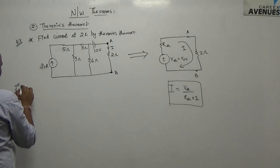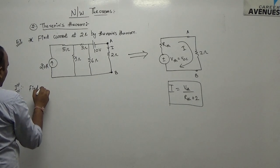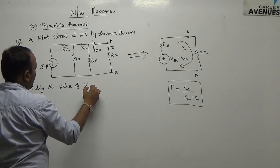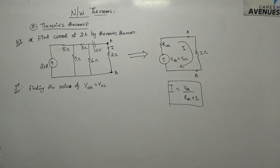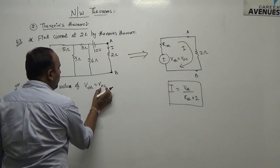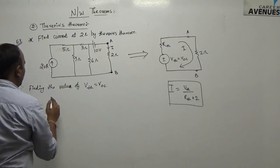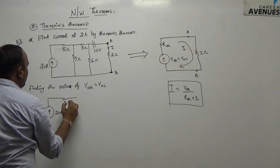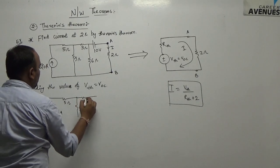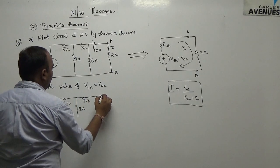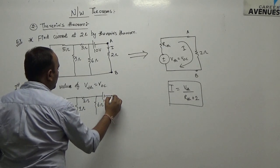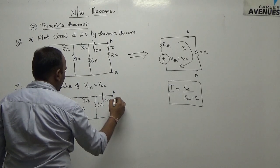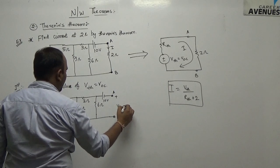First, finding the value of Vth, which equals V open circuit. The equivalent diagram for V open circuit: this particular part will be opened. So we have 20 ampere, 5 ohm, 9 ohm, 3 ohm, 6 ohm, 10 volts, and this particular part will be opened from A to B. Just assume the voltage V open circuit equals V Thevenin.